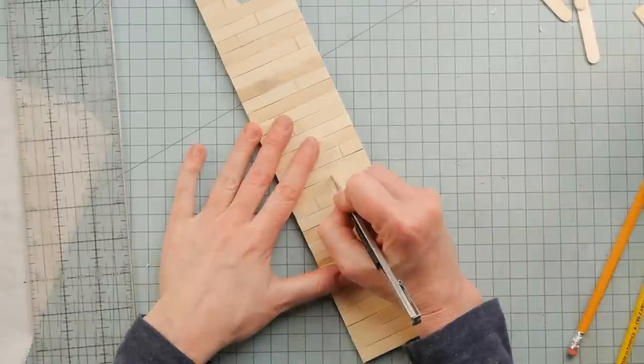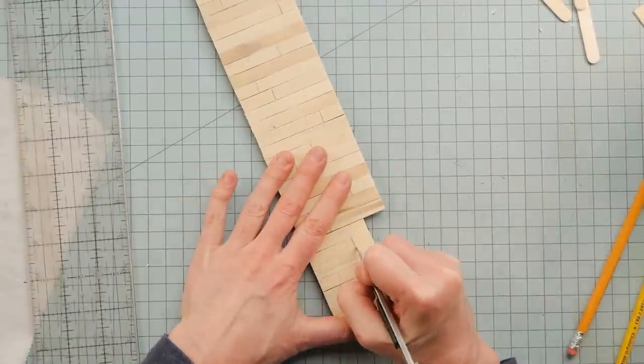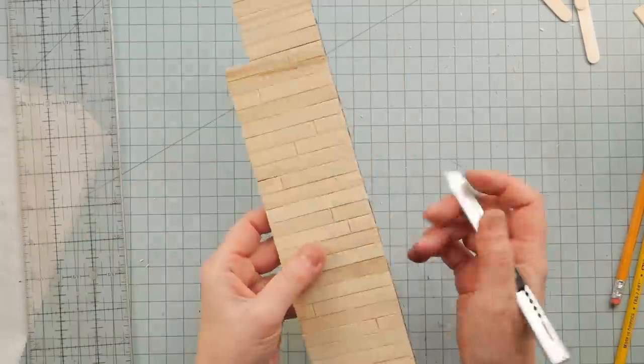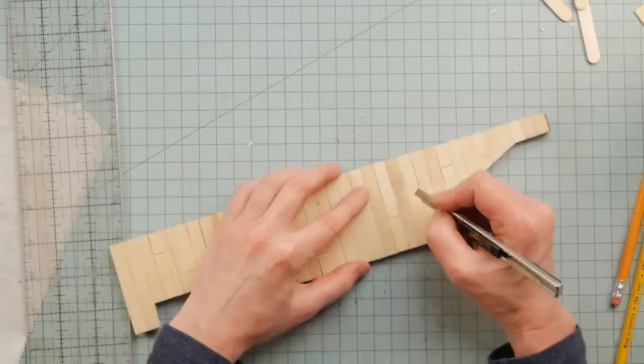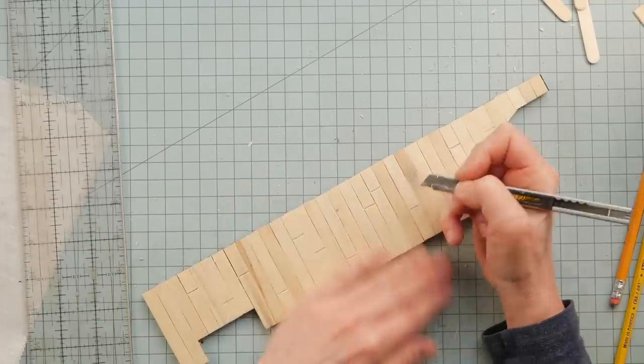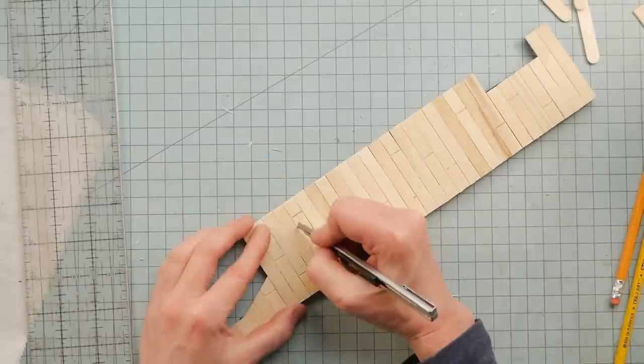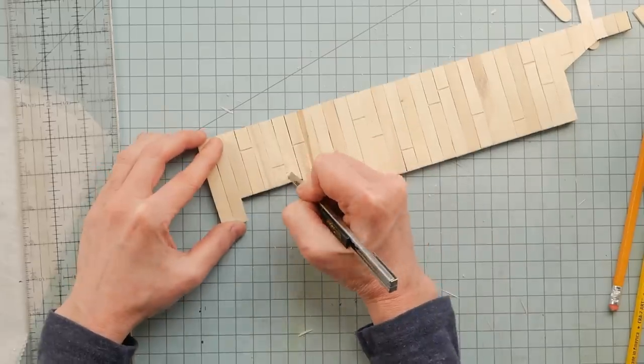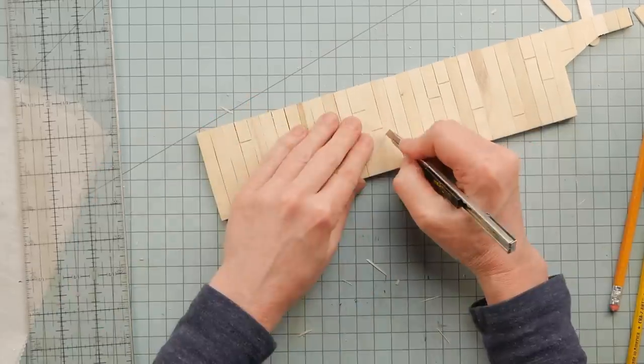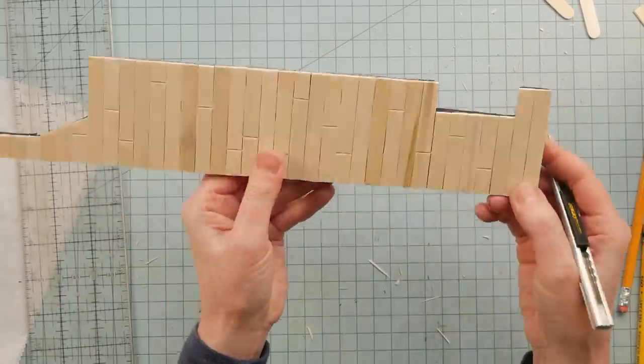Then I'm going to take my craft knife, and I'm going to create some separations in the boards, like there's different little boards in there. And I'm also going to take some little slivers off the side. You know how old wooden floors, they're not perfect. So that's exactly what I wanted this to look like.